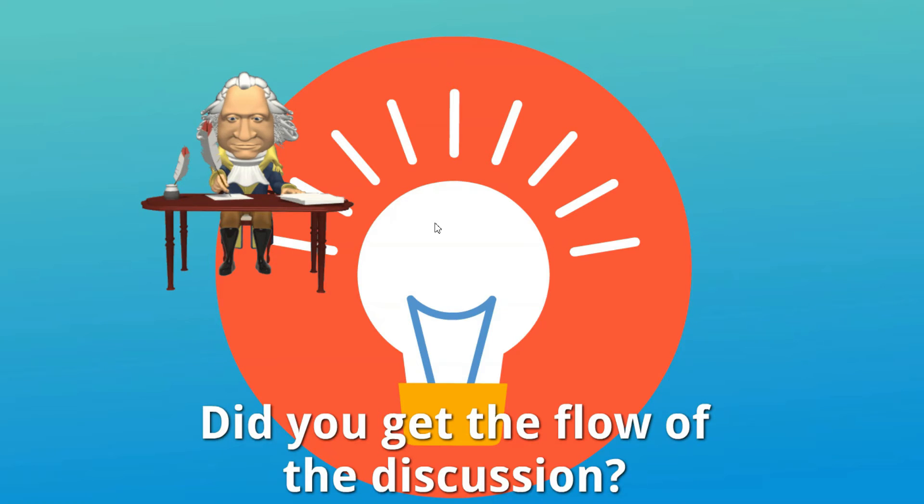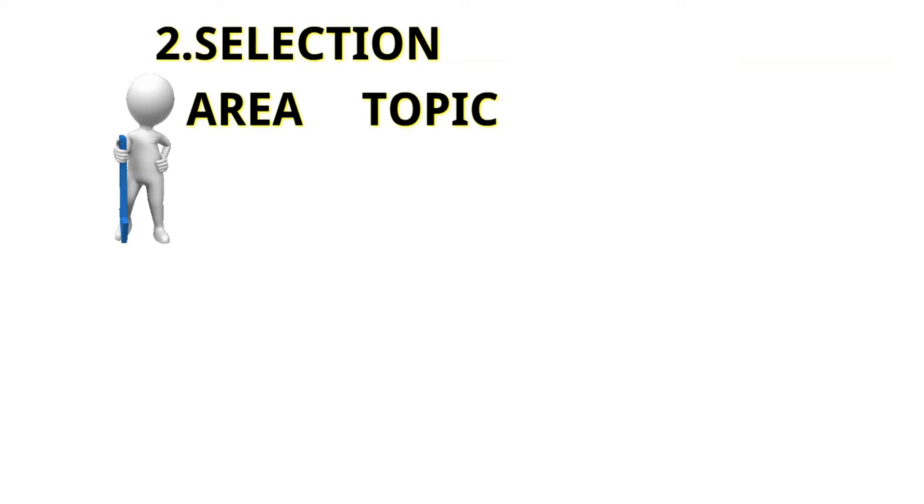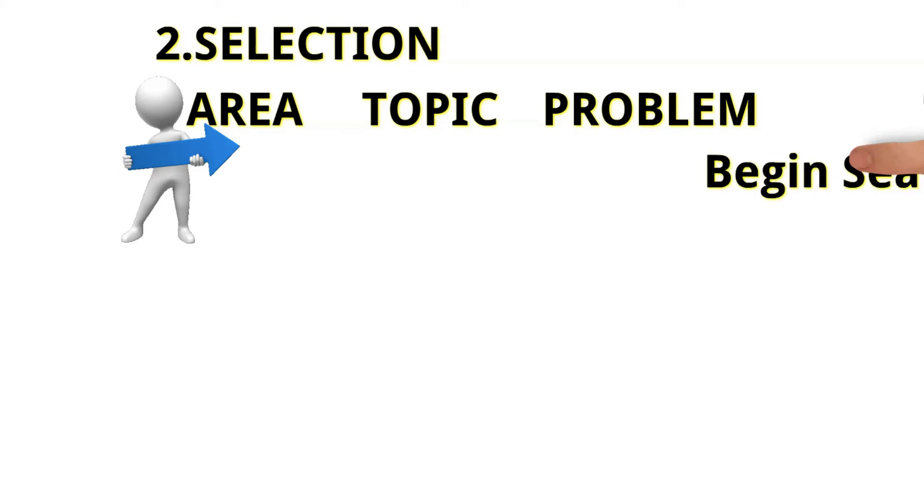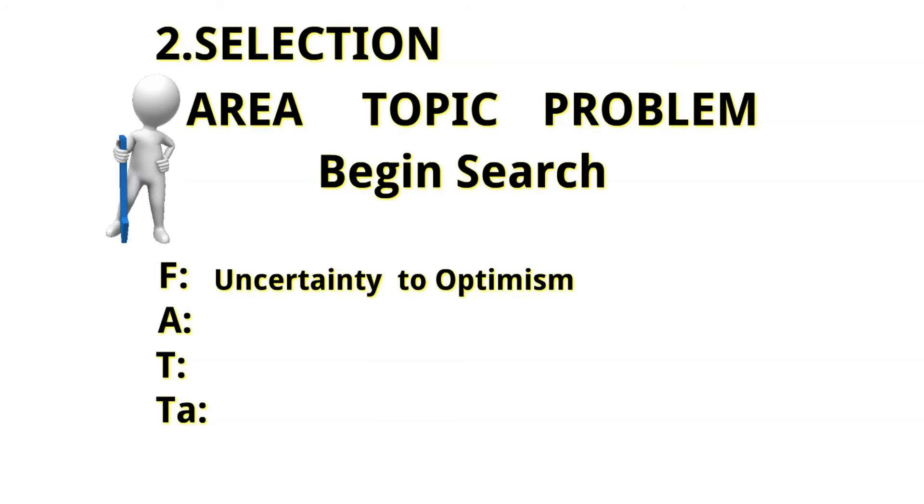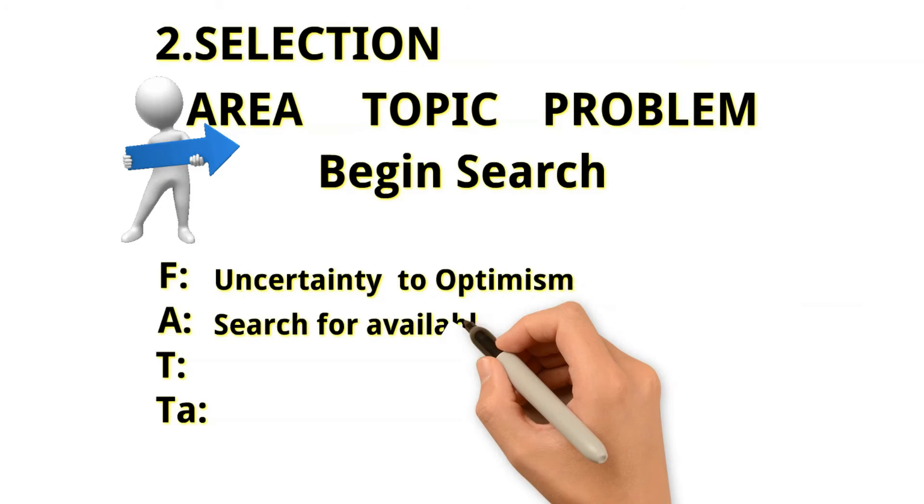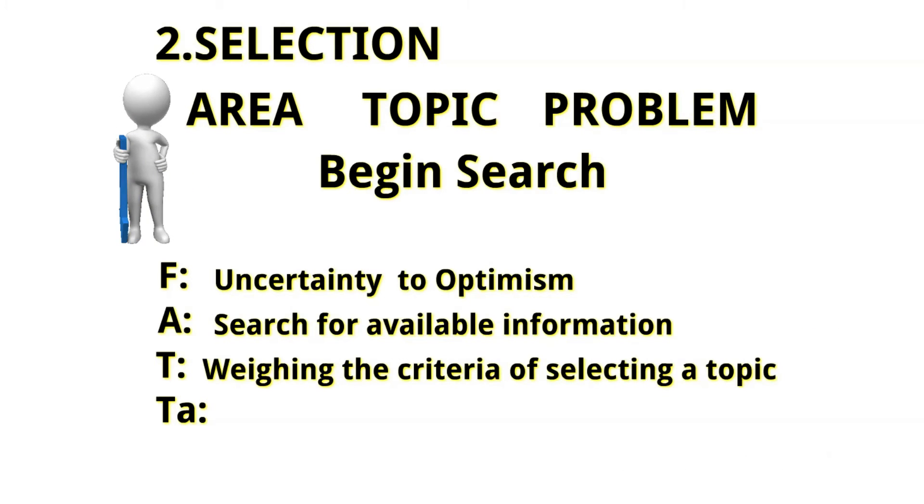Let us now proceed to the second stage of our ISP model, which is called Selection. Selection is when a general area, topic, or problem is identified and there is now a readiness to begin for a search. Also remember that the feeling of anxiety is likely to intensify until the choice is made. Again, we'll be talking about the FAT and your task. Let's start with feeling. Feeling is started from uncertainty to optimism. Optimism means there is now a hopefulness or confidence about the successful outcome of our research. Actions involved in the selection stage would be searching for available information, and thoughts would involve centering on weighing the criteria of your selected topic.